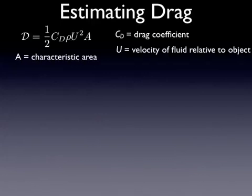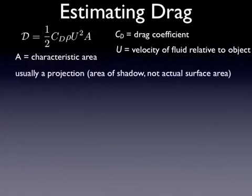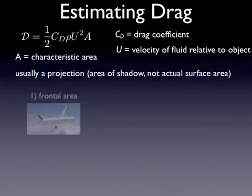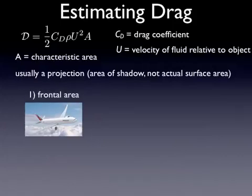And area is the characteristic area. With a flat plate, it was obvious what area we were talking about. With a three-dimensional object, it's not so obvious. What's typically used is a projection, or the area of the shadow that the object would create. So we don't use the actual surface area of the object. There's two projections that are typically used. A frontal area is commonly used. So for a plane, for example, if you were to calculate the drag force on the plane, you would probably want to use the shadow projected by the object as if you're looking straight at it.